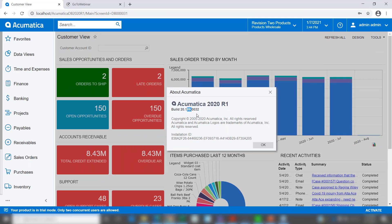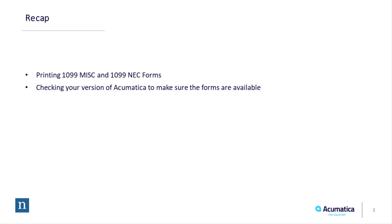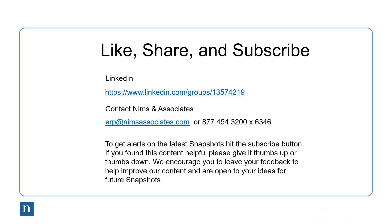If you're not on a current enough version, you need to contact your reseller about getting a later update installed or upgrading to a later version of Acumatica. As a recap, we took a look at printing the 1099 MISC and the 1099 NEC forms, which are automatically available based on the version of Acumatica you're running — there are no utilities to run. You just need to make sure you are on a late enough version.